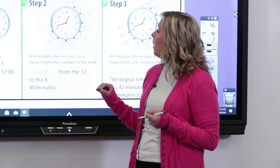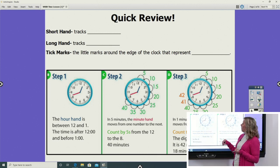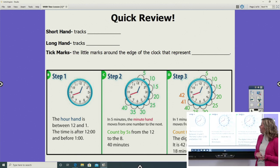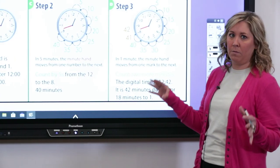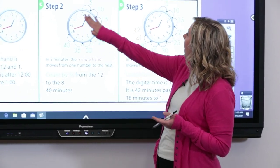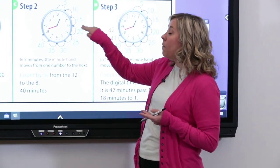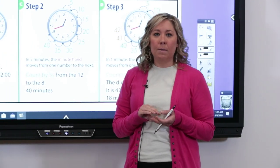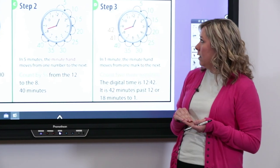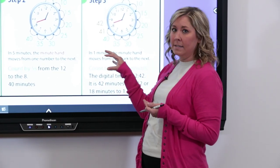As a quick review, I kind of want to go over the analog clock. Looking at our analog clock, we want to remember that our short hand is going to be tracking our hours, and the long hand is going to be tracking our minutes, and those tick marks — this is all math vocabulary that we should be using when we're talking about time — those tick marks are the little marks around the edges of the clock that represent one minute each, and you can see by counting by fives or by ones that there are 60 of those in one hour. So that's just a quick little review, and when we start using our number line and making those hops, we're going to be counting by fives and tens and also hours, so we can kind of visualize in our minds what that looks like on our analog clock as we're doing it.